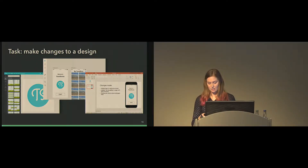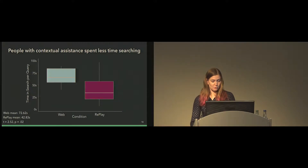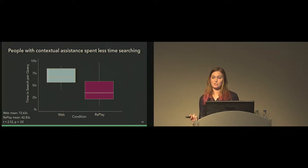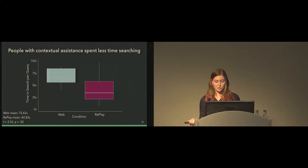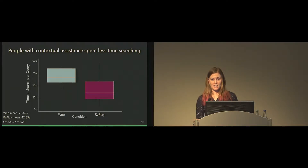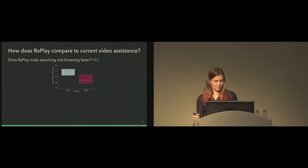To our first question, we did find that people with Replay's contextual assistance spent less time searching. Six people in the study didn't search at all — two in the Replay condition and four in the web condition. Even among those who did search, people varied a lot in how often they searched for help. Considering time spent per query, on average people in the Replay condition spent about 40% less time — about 30 seconds less — in the search interface per search.